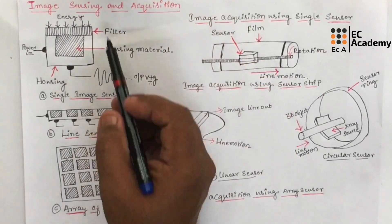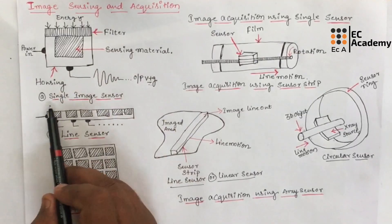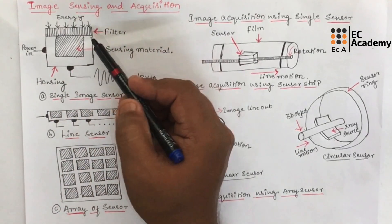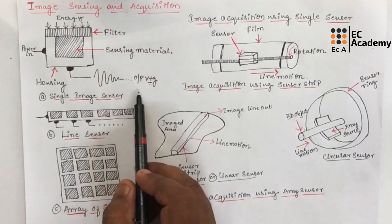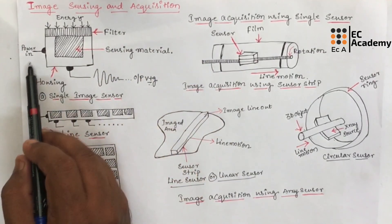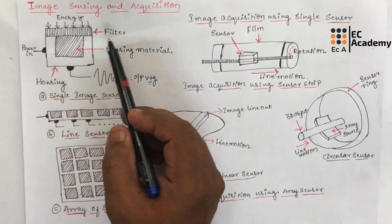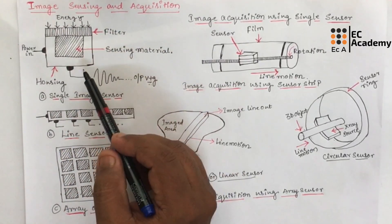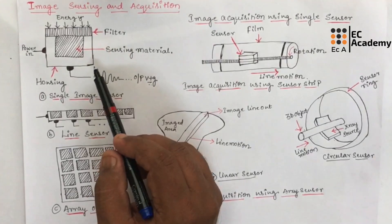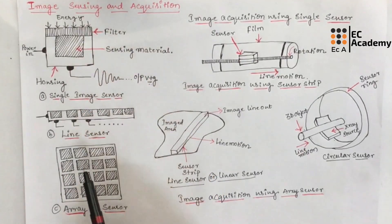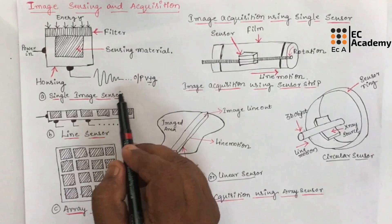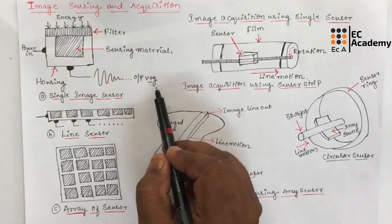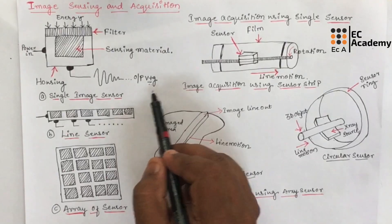So to acquire an image, we require a sensor. Figure A shows a single sensor. Here the incoming energy is transformed into the voltage by combination of input electrical power and the sensing material. This sensing material will be responsive to particular type of energy that is being detected. The output voltage is response of the sensor. Digital quantity of this output voltage is obtained using a digitizer.